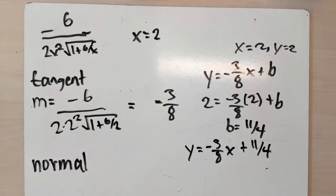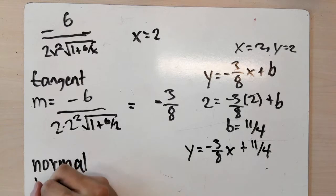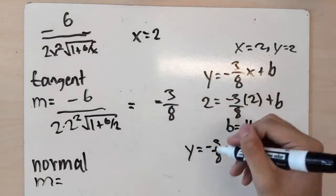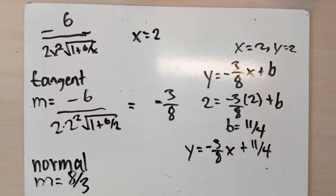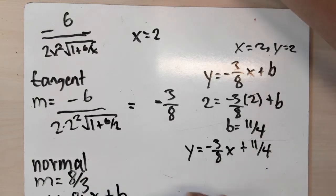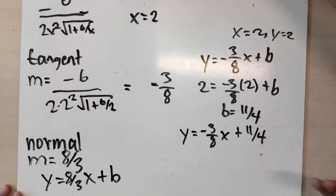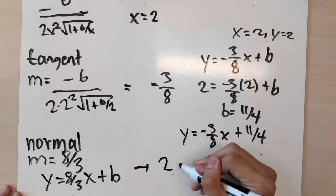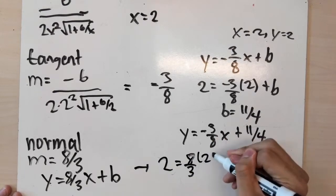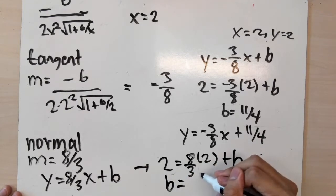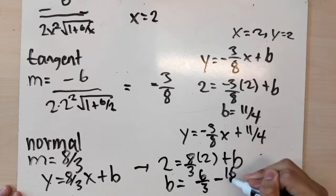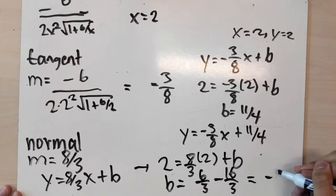For the normal: the normal is simply the line perpendicular to the tangent. To find its slope, take the negative reciprocal of the tangent's slope — flip it and change the sign — so the slope becomes 8 over 3. Then y equals 8 over 3 times x plus b. Since when x equals 2, y equals 2, we plug in: 2 equals (8 over 3) times 2 plus b, giving b equals 6 over 3 minus 16 over 3, which equals negative 10 over 3.